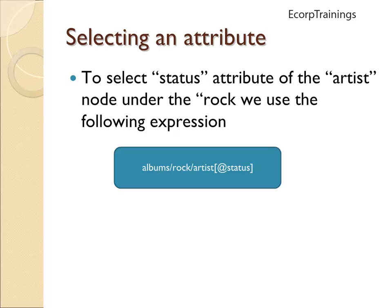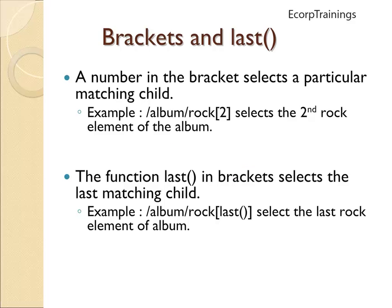Coming to selecting an attribute: to select the status attribute of the artist node under the rock element, we use the expression album/rock/artist/@status. In XPath there are two special functions: bracket notation and the last() function. A number in brackets selects a particular matching child — for example, /album/rock[2] selects the second rock element of the album. The last() function in brackets selects the last matching child — for example, /album/rock[last()] selects the last rock element of album.